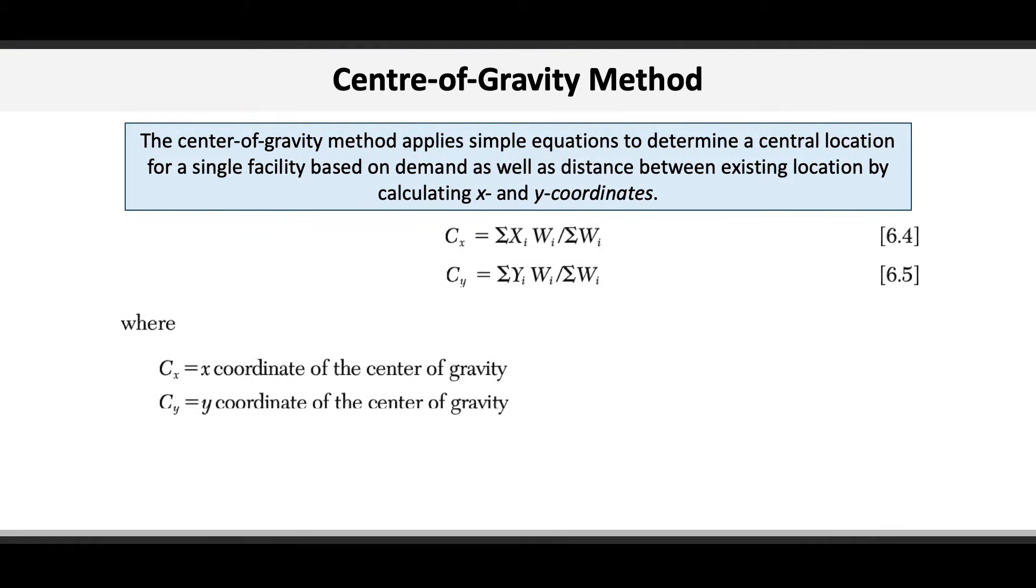The equation to determine the x coordinate for the center of gravity, or Cx, is the sum of Xi times Wi divided by the sum of Wi. And the equation to determine the y coordinate of the center of gravity, Cy, is the sum of Yi times Wi divided by the sum of Wi.